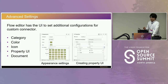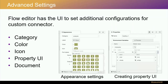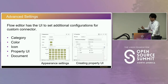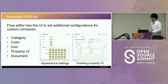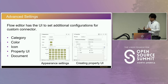In the previous 10 steps, I introduced the basic method for developing a custom connector from subflow. The flow editor provides a user interface for additional connector configuration. For example, in the appearance settings, flow developers can change the connector category, color, and icon. They can also create connector property UI and documentation for the Node-RED user interface. Example custom connectors will be useful to understand how to use these features.